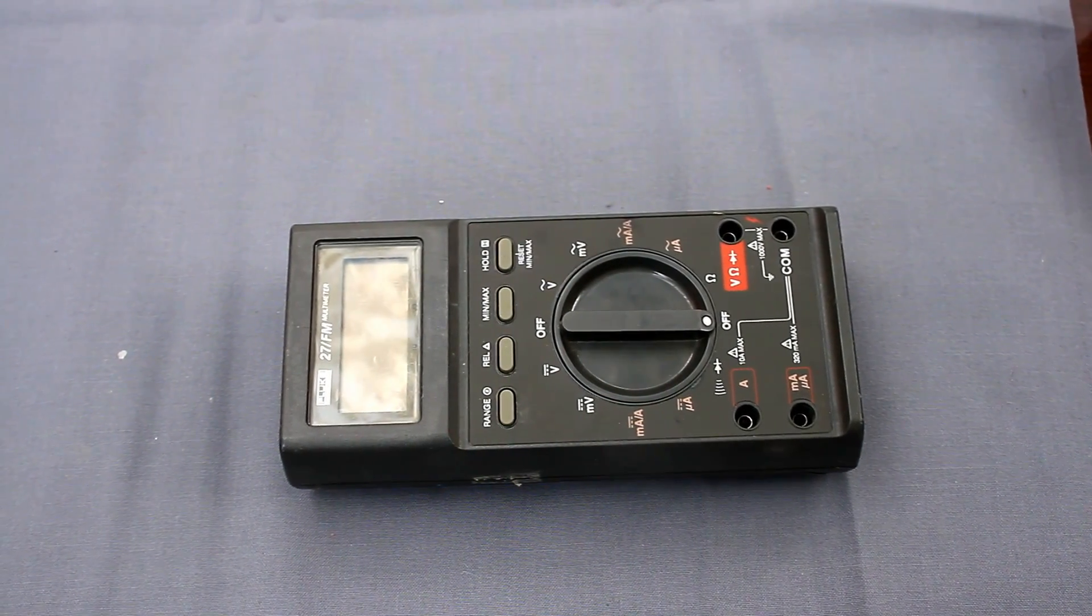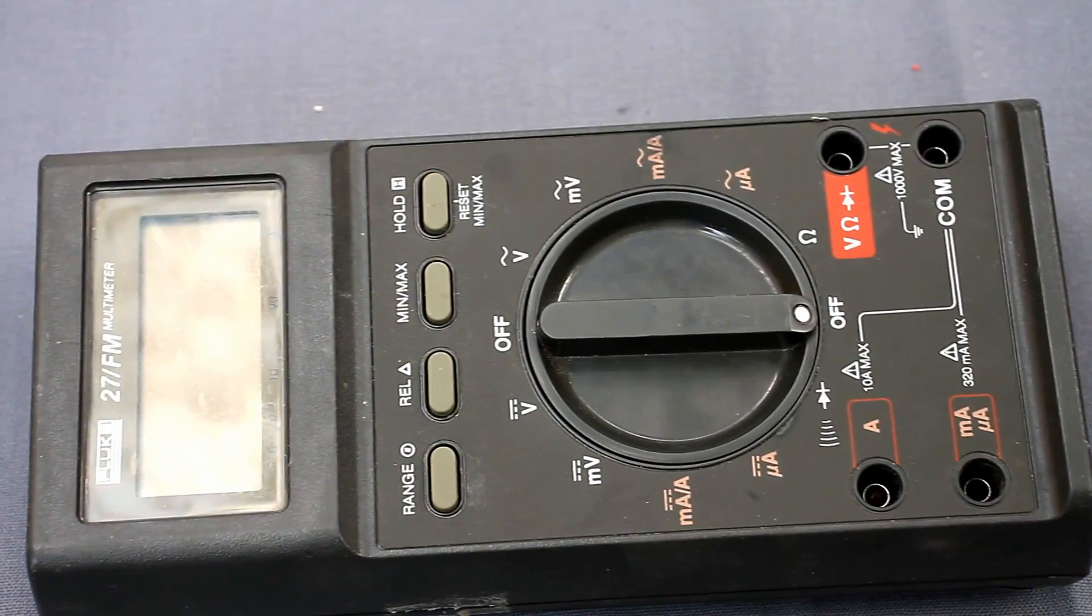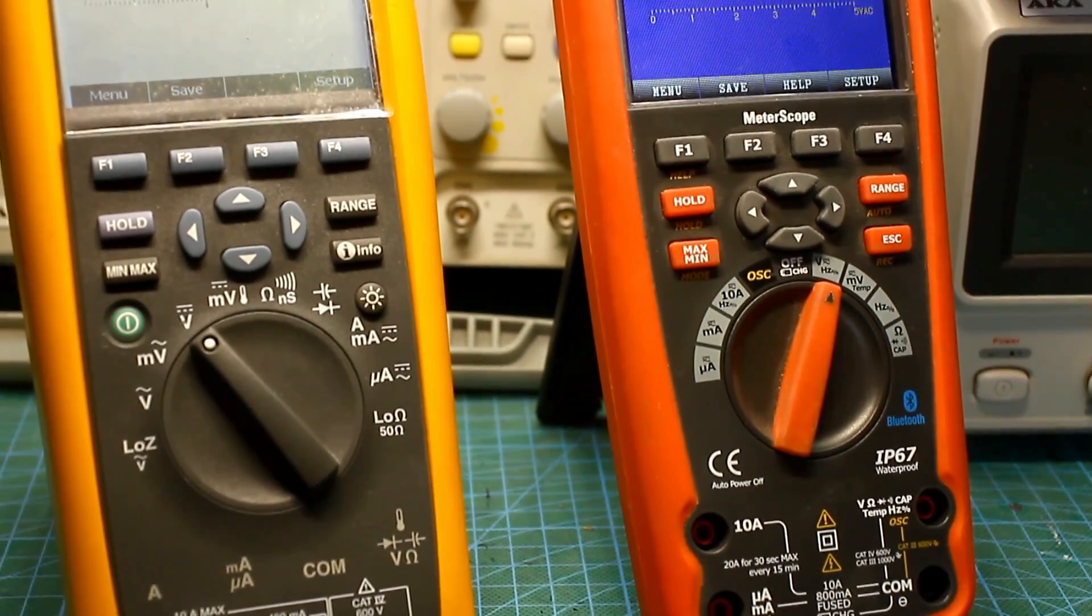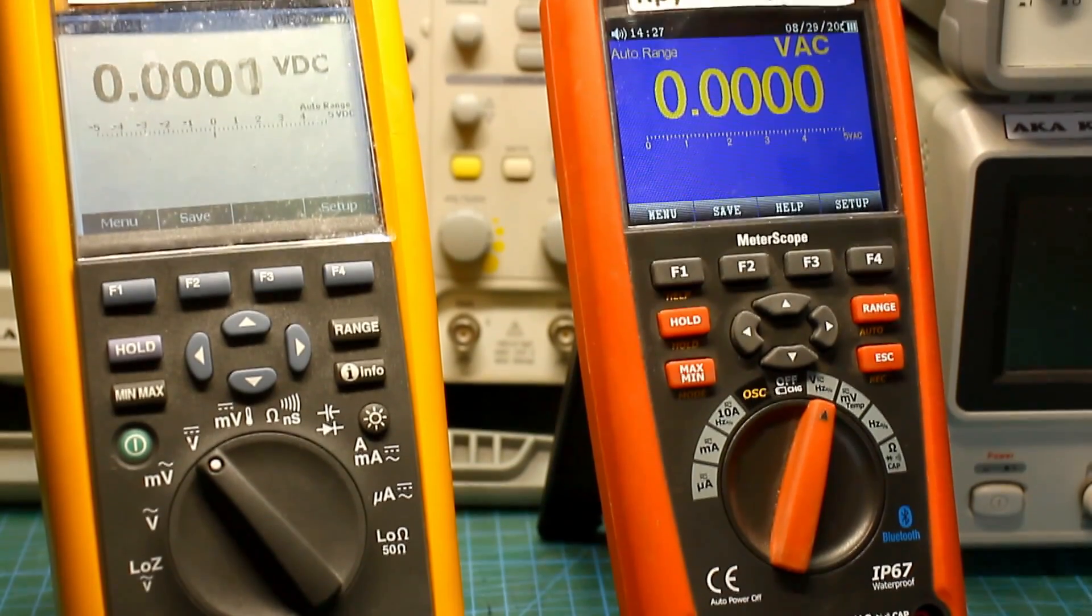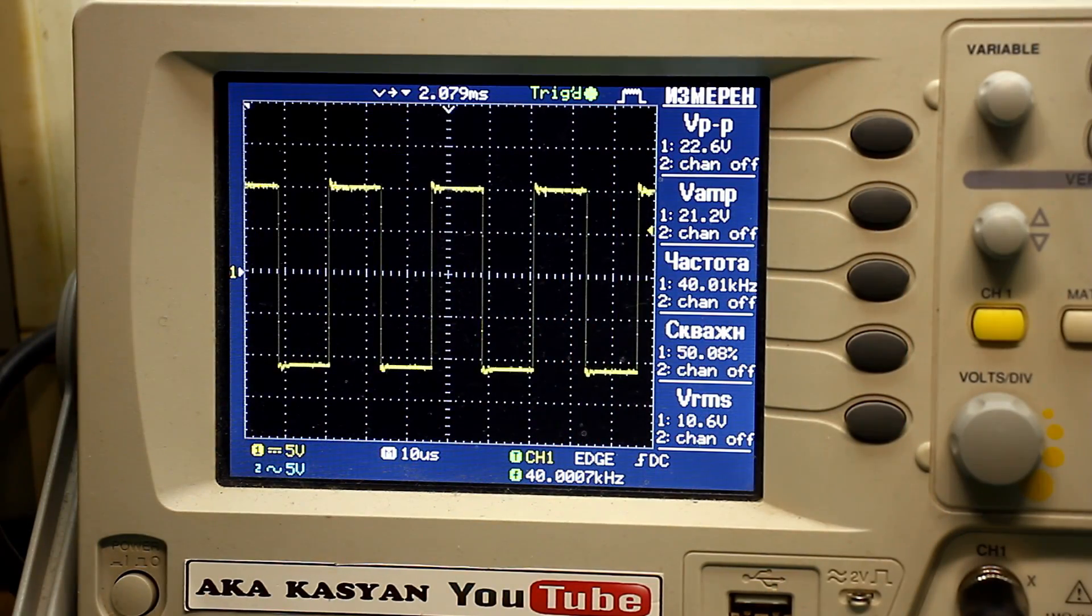As I said, this multimeter is a true RMS class device, that is, it is capable of measuring the true RMS value. Such multimeters can adequately measure the true voltage value regardless of the waveform. It doesn't matter if it is a sinus, a triangle or a square wave.